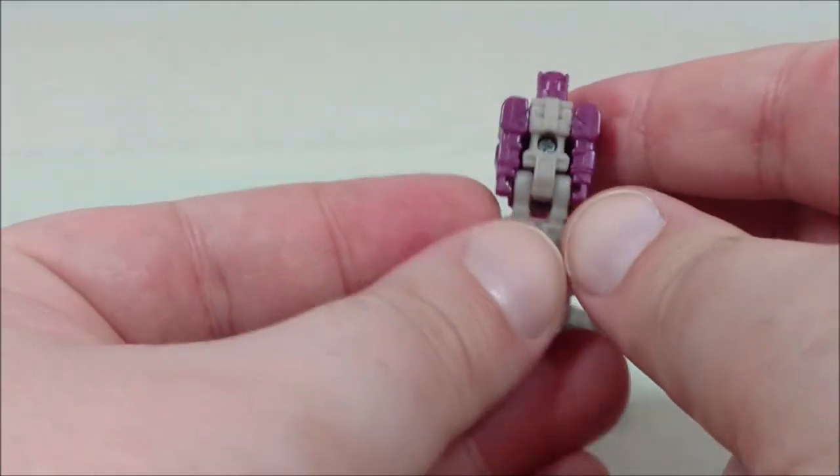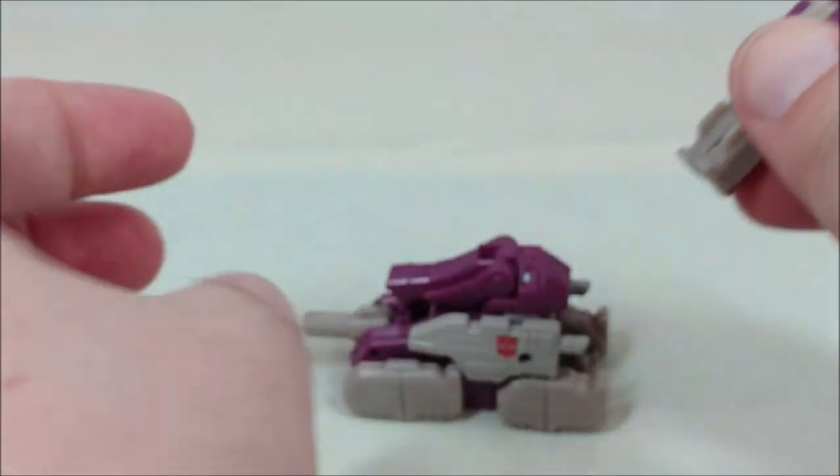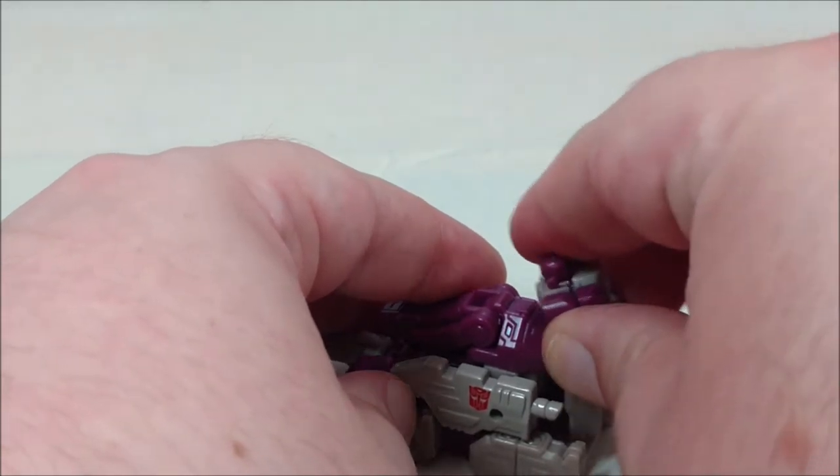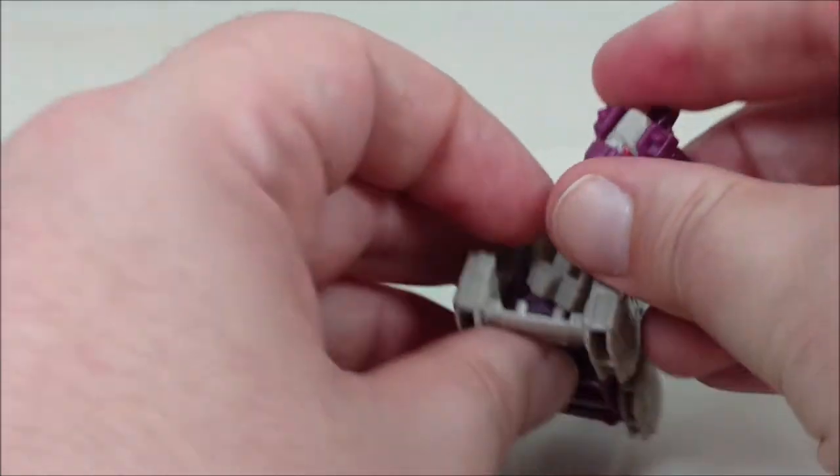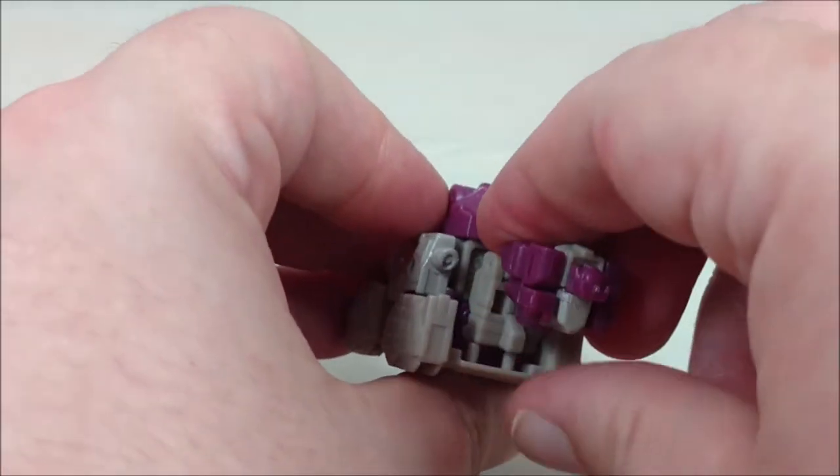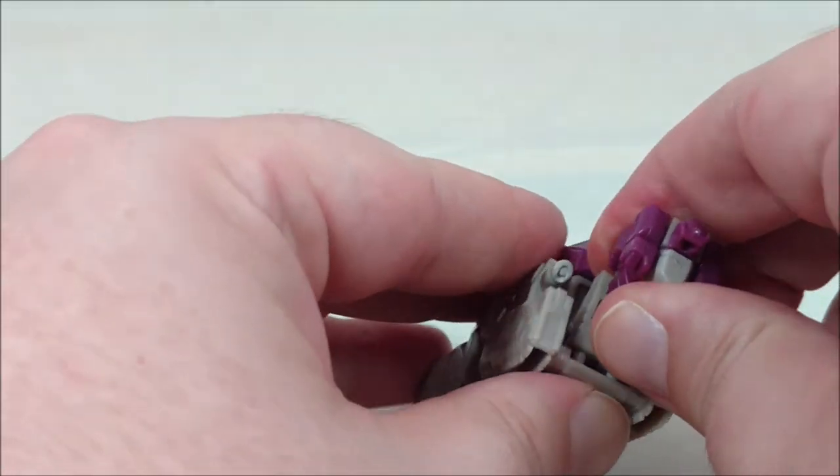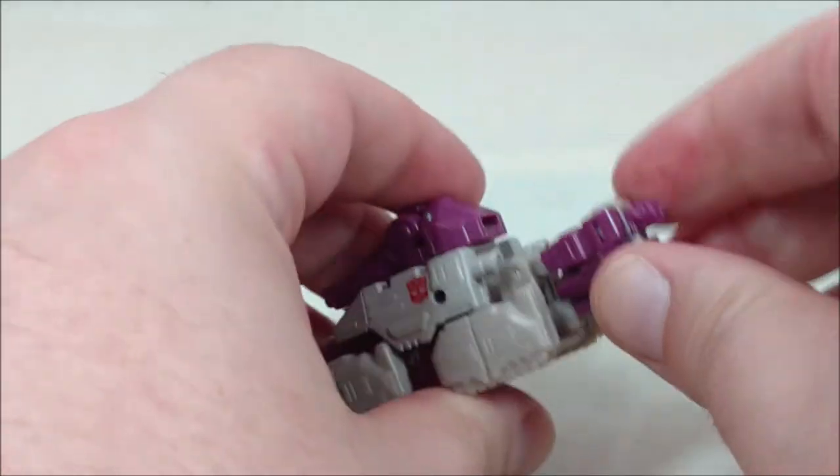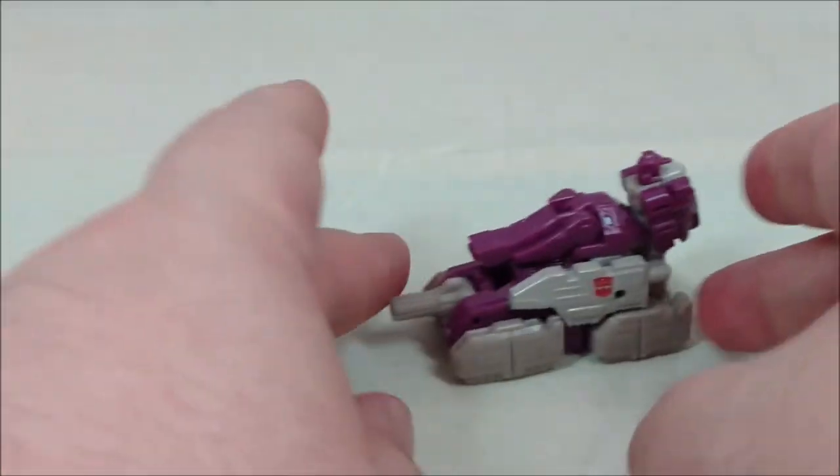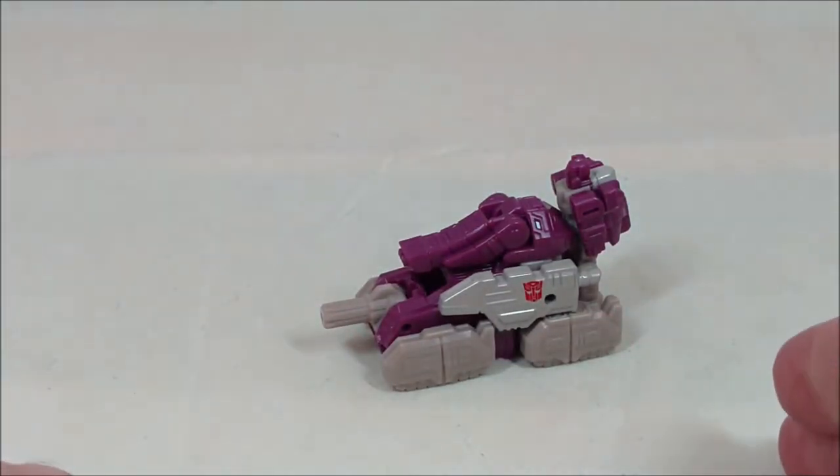And then the robot is, of course, as usual, nothing special. But it does peg into the back here. There are some pegs. Usually what I find I do is I just bend the figure backwards and you can get the leverage you need. And there you go. You want to raise the arms, you can raise the arms. And this is actually one of the better Titan Master vehicles I can remember seeing.